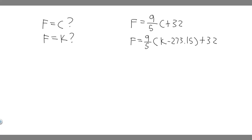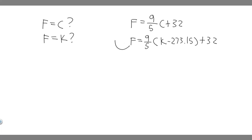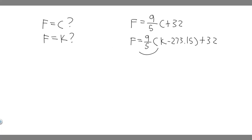To find where they're the same, all we have to do is substitute C in for F, and then K in for F, because we're finding where they're exactly the same. So basically, we just plug in C for this and then K for this, and solve for whatever C is. Let's go ahead and start with the top one.